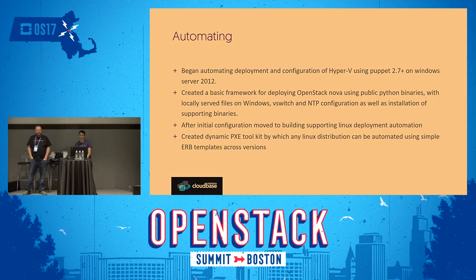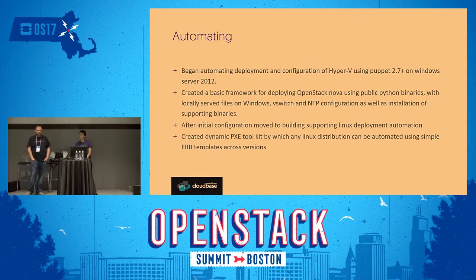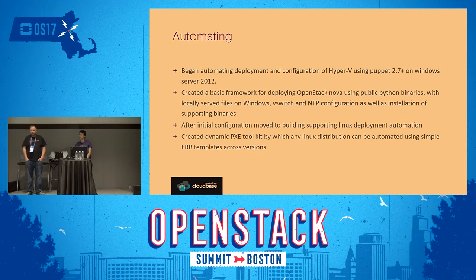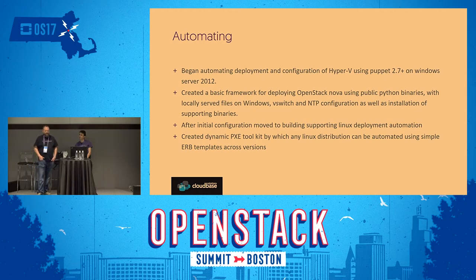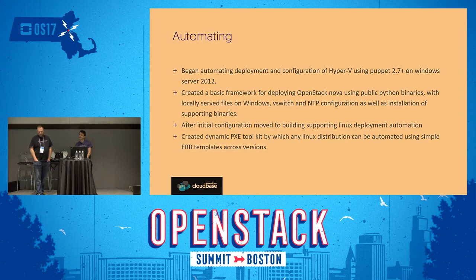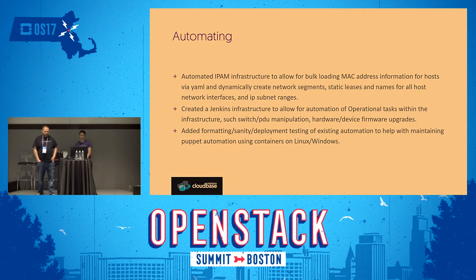We set out building a basic framework in Puppet, pulling together all the necessary pieces to get OpenStack running on Hyper-V using binaries already being produced by the community. We then built a PXE infrastructure that allowed us to switch between different Linux distributions, because the Microsoft lab proxies at the time would sometimes prevent access to installation sources — so we had to be able to swap from CentOS to Scientific to Fedora to Debian to Ubuntu just to get something to run.